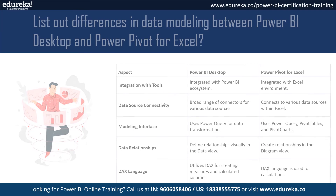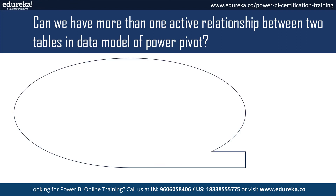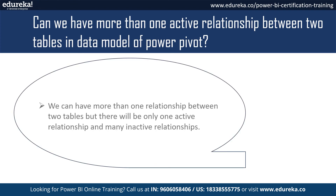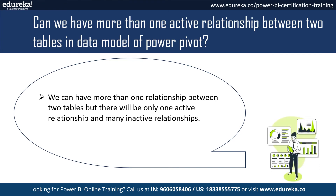Can we have more than one active relationship between two tables in the PowerPivot data model? The answer is yes — we can have more than one relationship between two tables, but there will be only one active relationship and many inactive relationships.